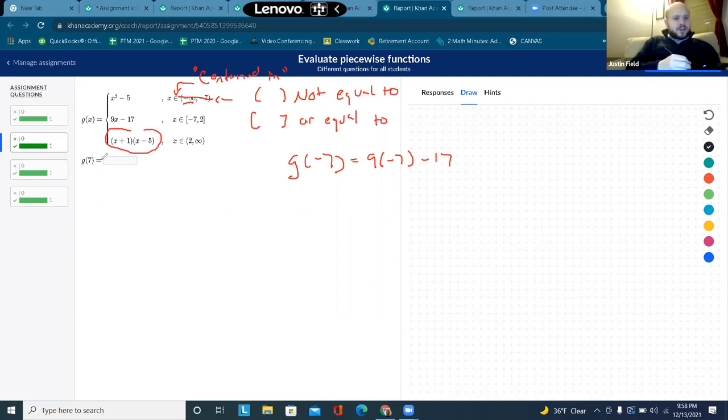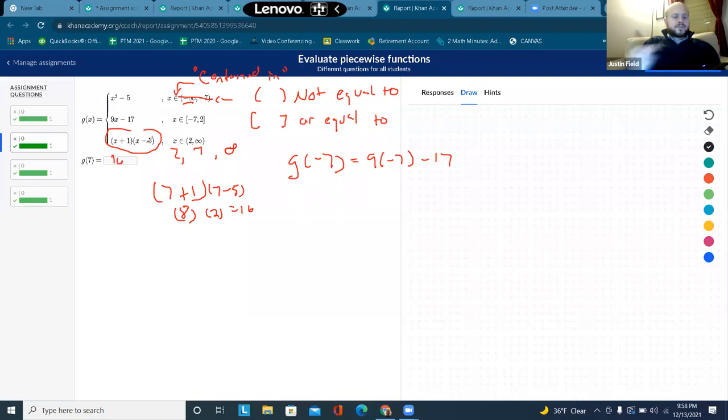So 7, positive 7 is between 2 and infinity, right? So we're going to choose this one. 7 plus 1, 7 minus 5. So that would be 8, and that would be 2, 16.